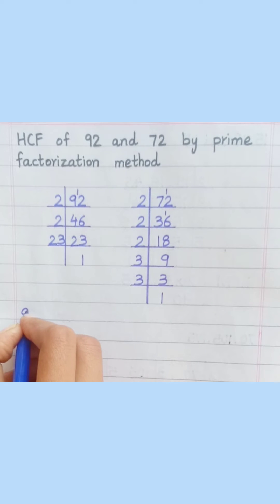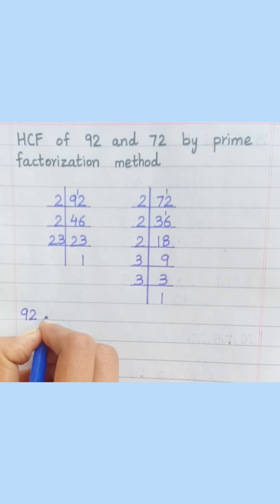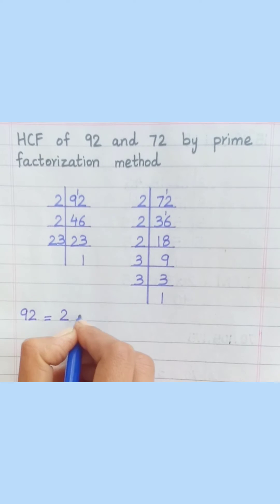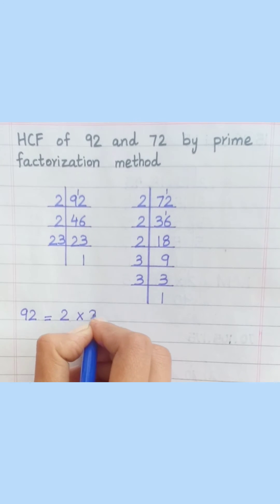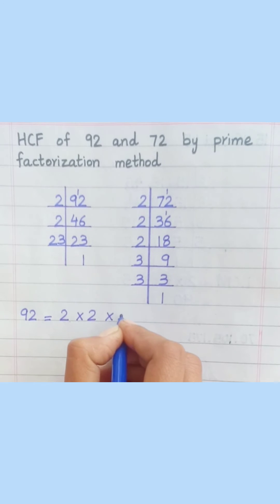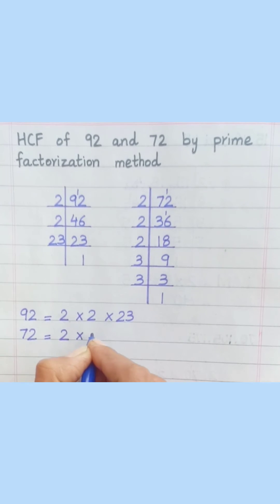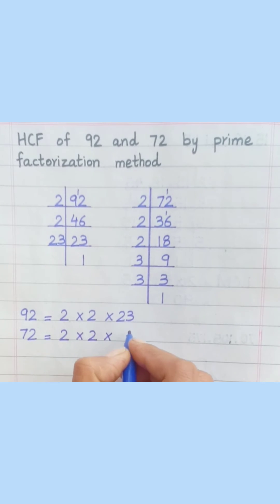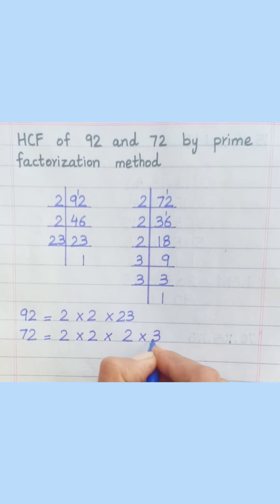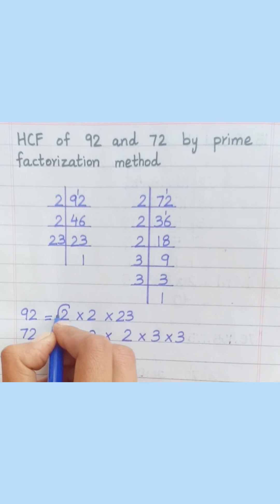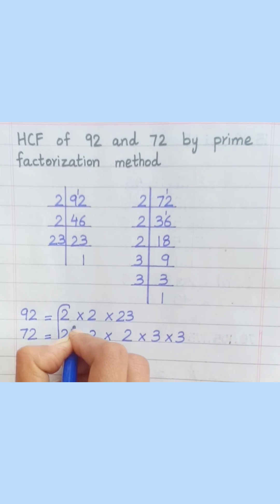So 92 equals 2 multiply 2 multiply 23. And 72 equals 2 multiply 2 multiply 2 multiply 3 multiply 3 multiply 3. Now loop the common prime factors among both.